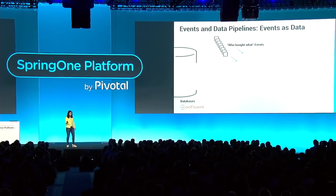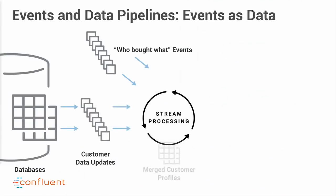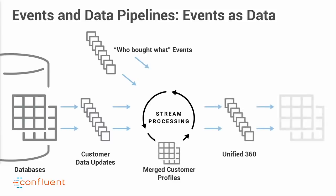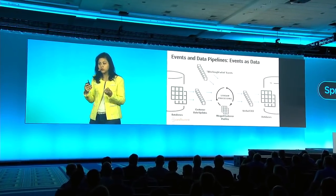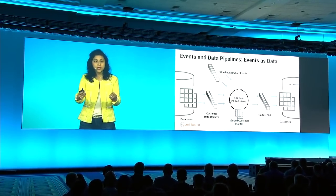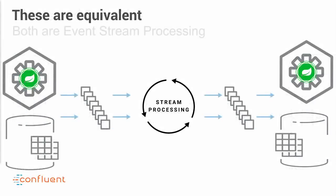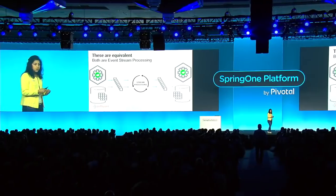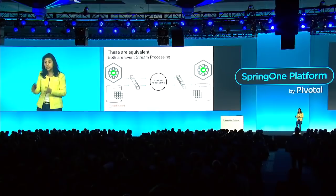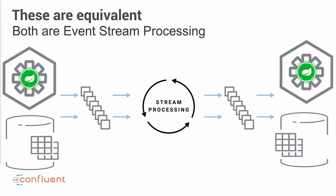Event streams also take the form of data pipelines. For example, you take the same sale event stream, glean customer buying preferences, join it with the change log from your customer database, create a unified customer 360-degree profile, and store it downstream in a Cassandra data store continuously. This looks less like microservices and more like an ETL pipeline — but both are equivalent. In both cases, you're taking event streams and joining them with tables to create new streams. The ability to combine data inside applications with data inside data systems is what makes event-driven architecture so powerful.